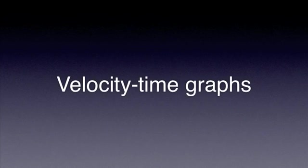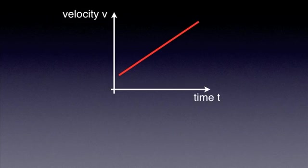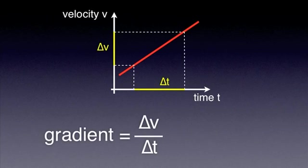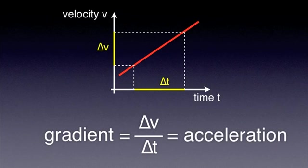Let's now move on to velocity-time graphs. What does the gradient of such a graph give us? Let's consider the following example. The gradient of the graph represents the change in velocity divided by the time interval. This gives us acceleration. So the gradient of a velocity-time graph represents the acceleration of a moving body.